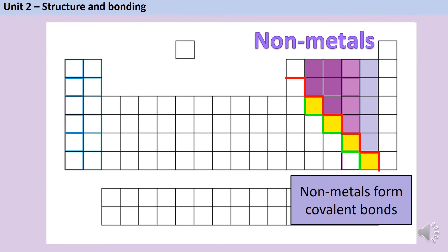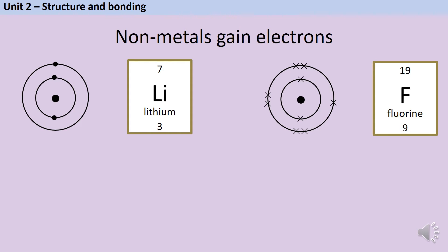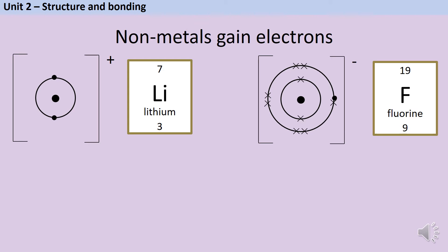Instead, we're just going to say that all of these elements in purple form covalent bonds, and also hydrogen. If you've watched the ionic bonding video, then you know that when non-metals bond, they have a tendency to accept electrons. They gain enough electrons to ensure that their outer shell is full. So when lithium bonds with fluorine, lithium, which is the metal, gives one electron to fluorine, which is the non-metal. As a result, the lithium forms a positive ion and the fluorine forms a negative fluoride ion.